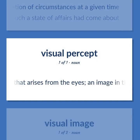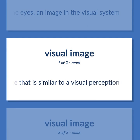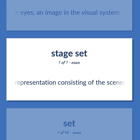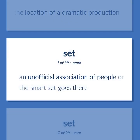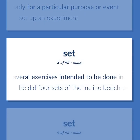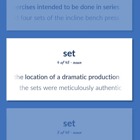Visual percept: A percept that arises from the eyes; an image in the visual system. A mental image that is similar to a visual perception. A percept that arises from the eyes; an image in the visual system. Set: Representation consisting of the scenery and other properties used to identify the location of a dramatic production. An unofficial association of people or groups. The smart set goes there. Get ready for a particular purpose or event. Set up an experiment. Several exercises intended to be done in series. He did four sets of the incline bench press. The sets were meticulously authentic.